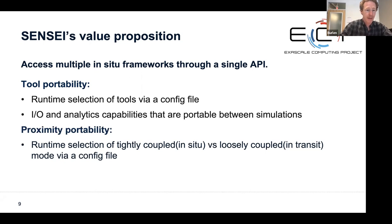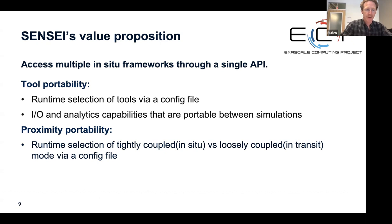A second dimension that we provide is proximity portability — the ability to switch between a tightly coupled in-situ configuration and a loosely coupled in-transit configuration, so that the analysis and simulation become decoupled and data can move to a different set of compute nodes. This portability is achieved the same way as tool portability: via runtime configuration file.